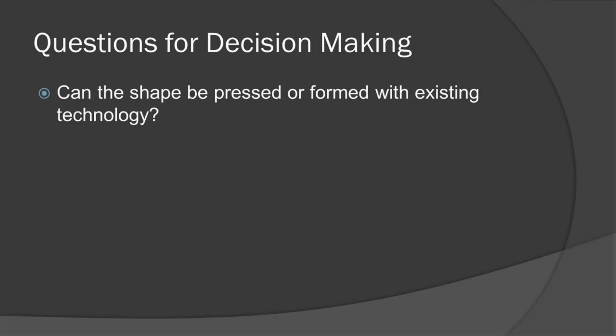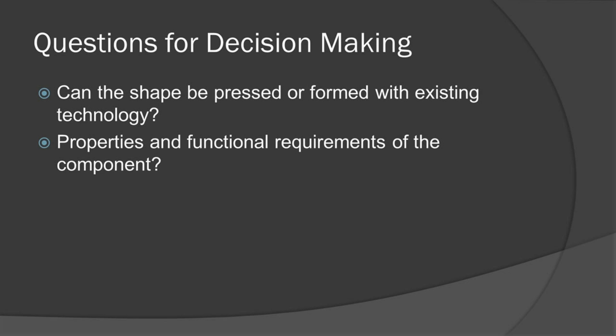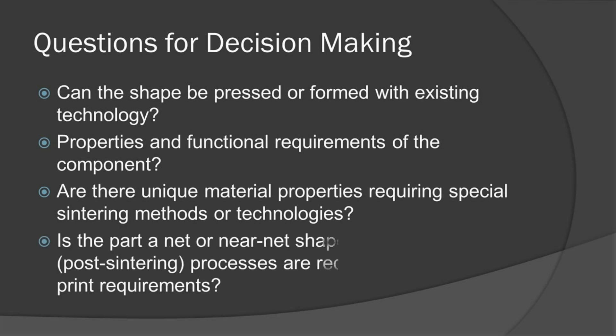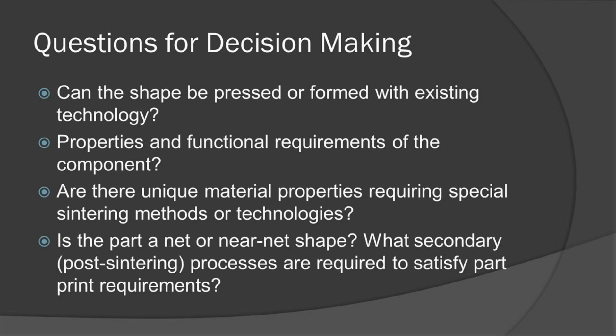Some of the questions that we ask when trying to make preliminary decisions on feasibility are: can the shape be pressed or formed with existing technology? What properties and functional requirements of the component are required? Are there unique material properties requiring special sintering methods or technologies? Is the part a net or near net shape component? If so, what secondary operations or post-sintering processes are required to satisfy part print requirements?